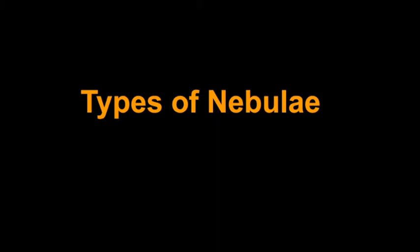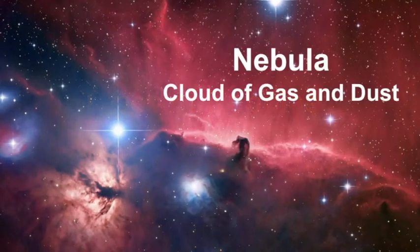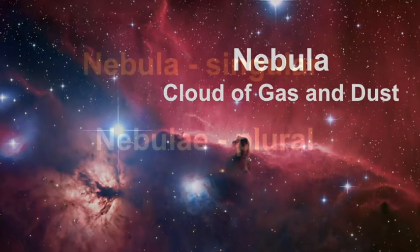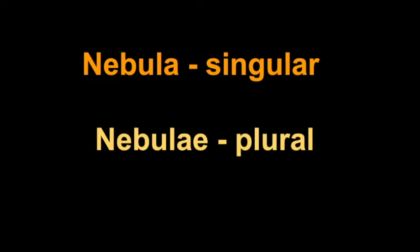Aloha, welcome to Learn the Sky. My name is Janine, and in this video we're going to review the types of nebulae that exist. A nebula is defined as a cloud of gas and dust that consists mostly of hydrogen, though there are other trace elements within the cloud such as water, formaldehyde, alcohol, and other trace elements.